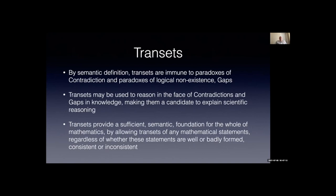Trans set theory is a semantic theory, not a syntactic one, which provides exactly what I want to totalize transmathematics. As we add axioms to deal with Gödel's incompleteness theorems, trans set theory is unperturbed — we're only changing the base language. By semantic definition, trans sets are immune to paradoxes of contradiction and paradoxes of logical non-existence (gaps). Trans sets may be used to reason in the face of contradictions and gaps in knowledge, making them a candidate to explain scientific reasoning. Trans sets provide a sufficient semantic foundation for the whole of mathematics.